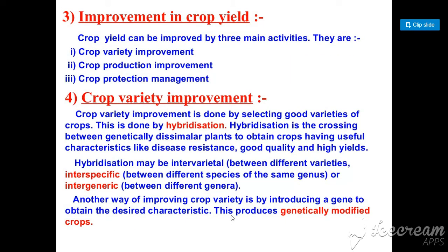The third question is: how can we improve the crop yield? We have three methods to improve crops. First is crop variety improvement. Second is crop production management — which includes using fertilizers or manure and proper irrigation. Third is crop protection management — which means saving the crop using insecticides and pesticides.